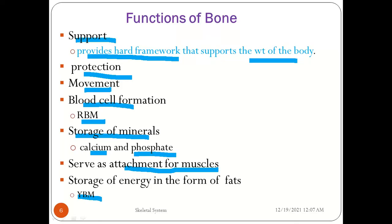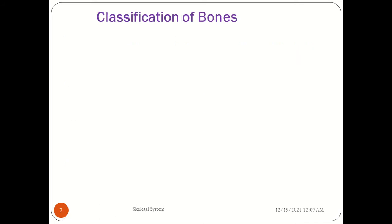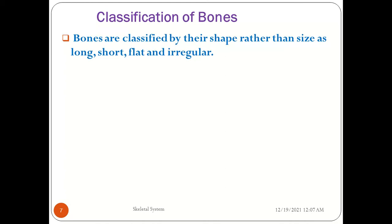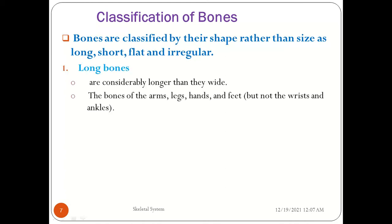Last time we covered the functions of bones. Now we will discuss the classification of bones. Bones are classified by their shape rather than size into four types: long bones, short bones, flat bones, and irregular bones.